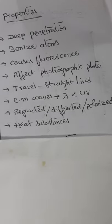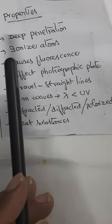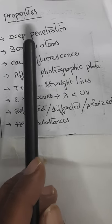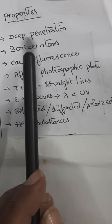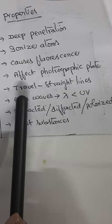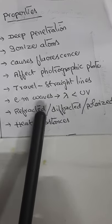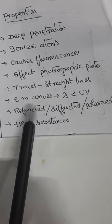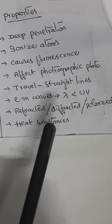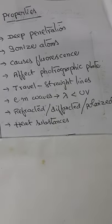At the engineering level, we shall recollect some significant properties of X-rays. X-rays can penetrate deep through solid matter, but the depth of penetration varies from material to material. X-rays can ionize the atoms of the medium with which they interact, cause certain chemical compounds to fluoresce, and affect photographic film. X-rays travel in straight lines, are invisible to the human eye, and are electromagnetic waves of wavelengths shorter than ultraviolet light. They can be refracted, diffracted, and polarized with suitable materials, and can heat the substance on which they fall.